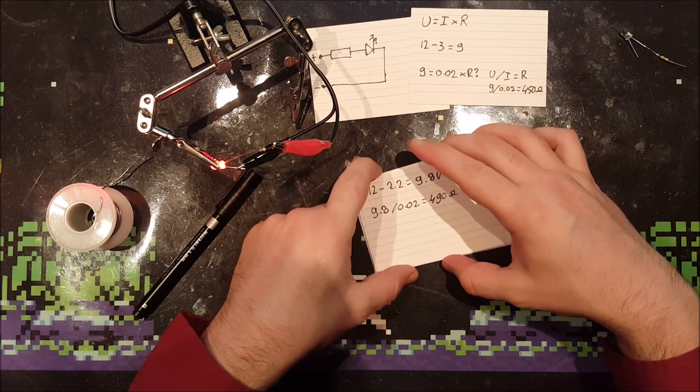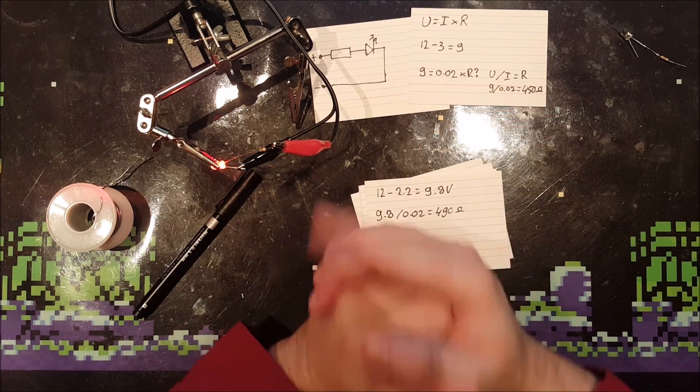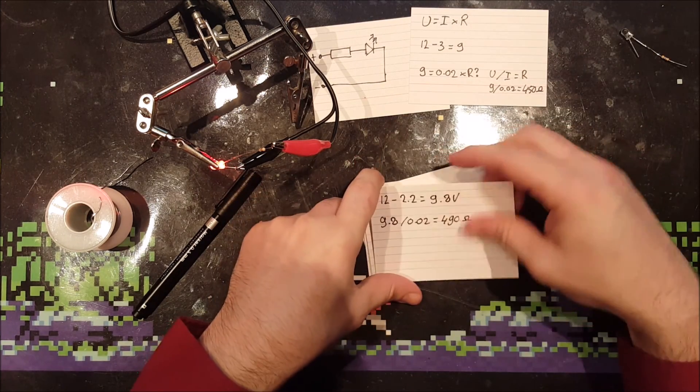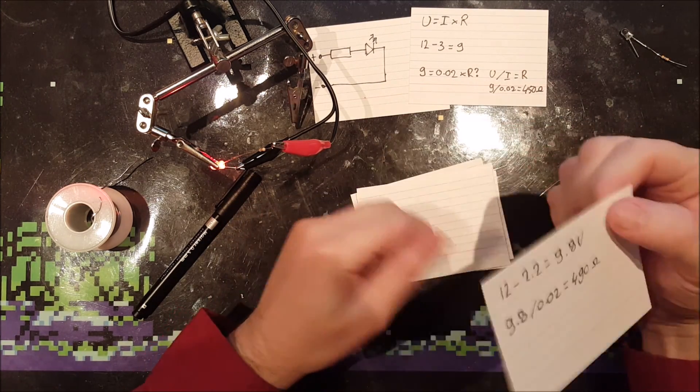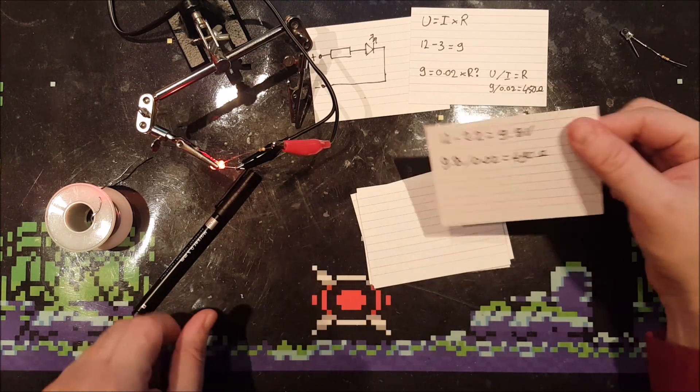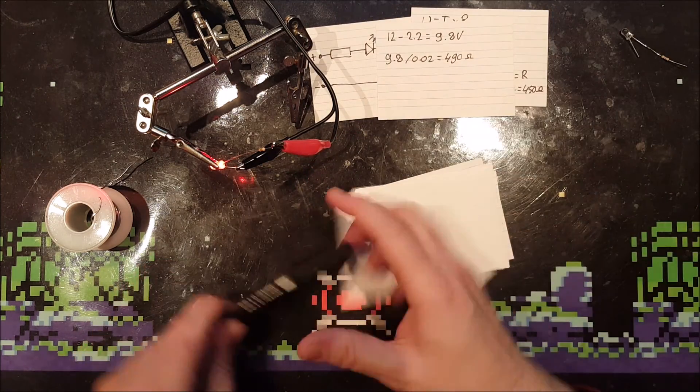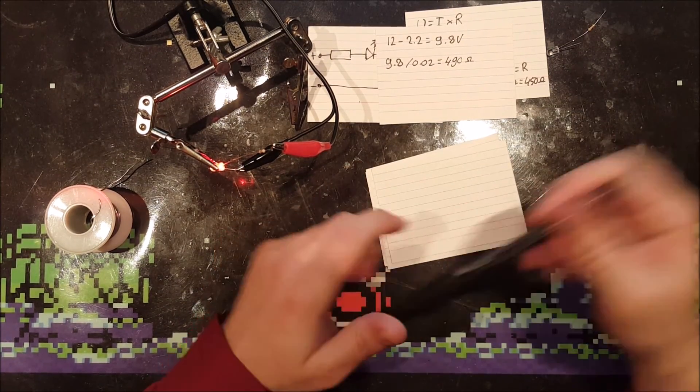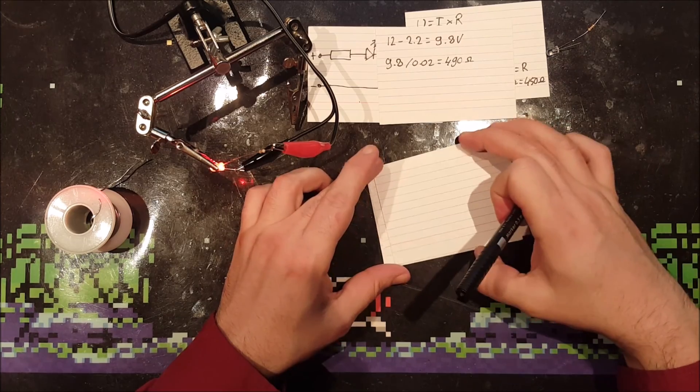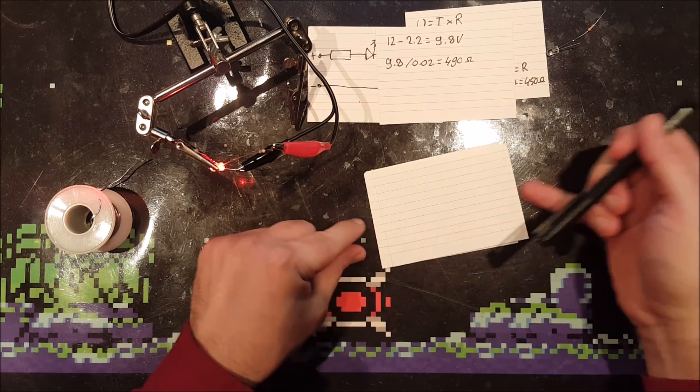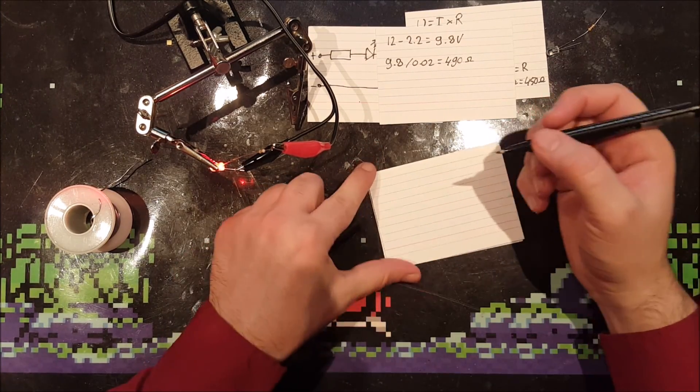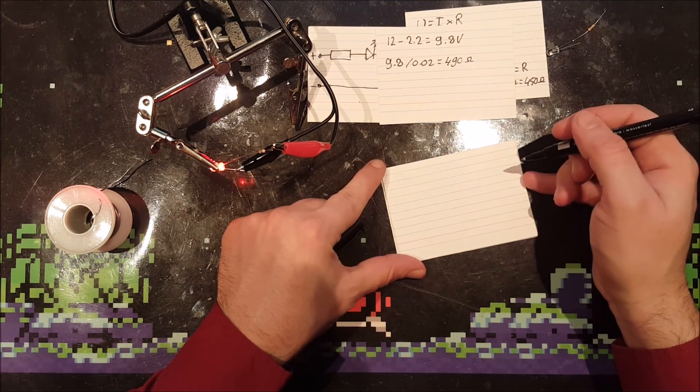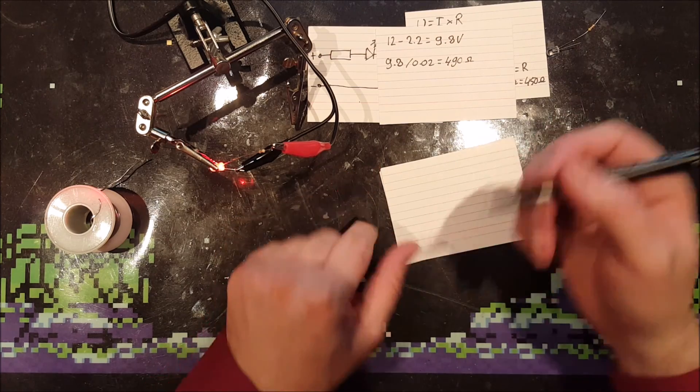What happens if we crank up this voltage to, say, 120 volts? Would a simple resistor still be enough? Let's find out. Sorry for the sudden jump, but I made a terrible thinking mistake. I was saying, can we just connect the LED to a 120 volt power source with just one resistor?